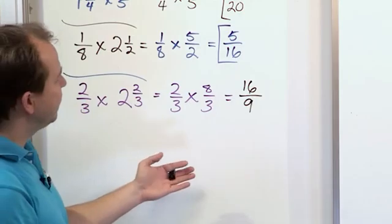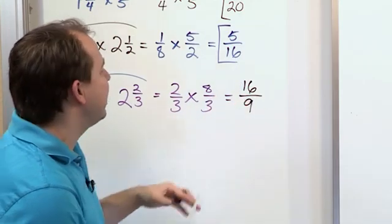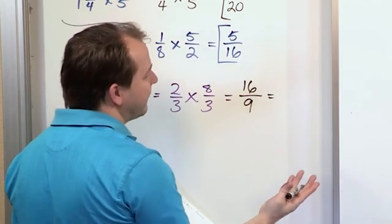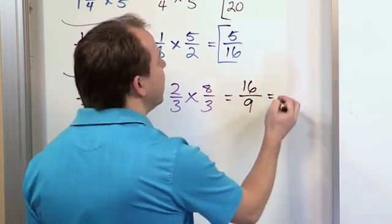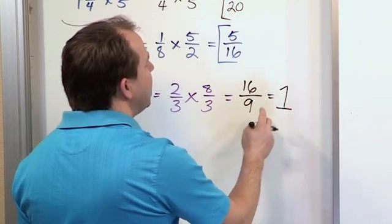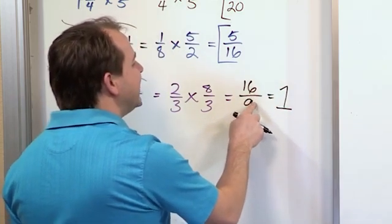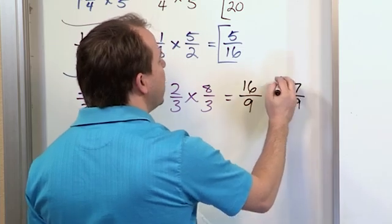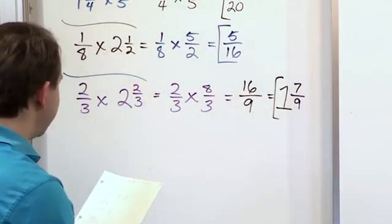So we try to simplify this, but we notice that it's an improper fraction. So how many times will 9 go into 16? Well, 9 × 2 is 18, that's too many times. So this only goes one time. And so the difference between 16 and 9 is 7, and I always write it over the denominator. So 1 7/9, that is the final answer.